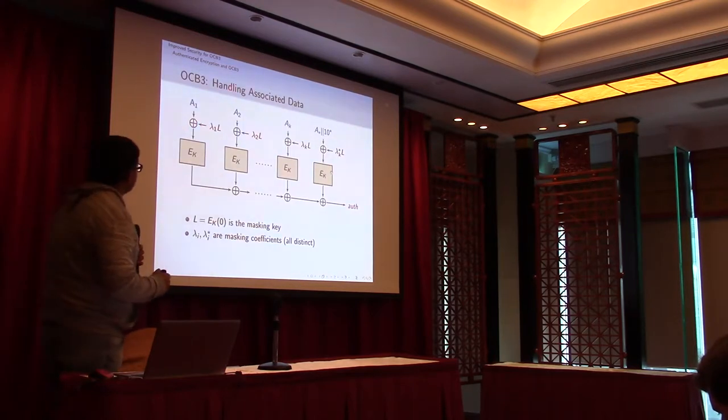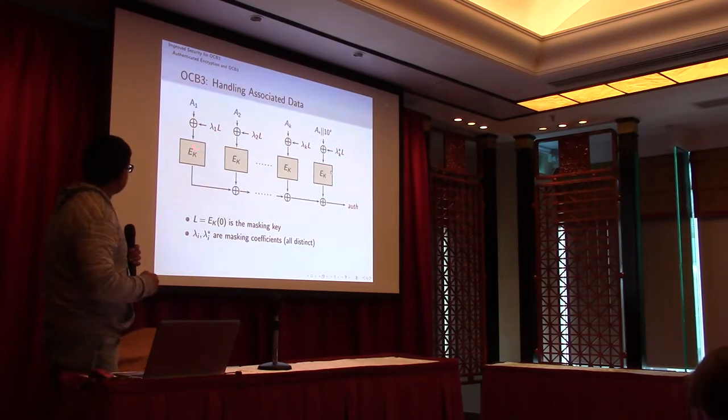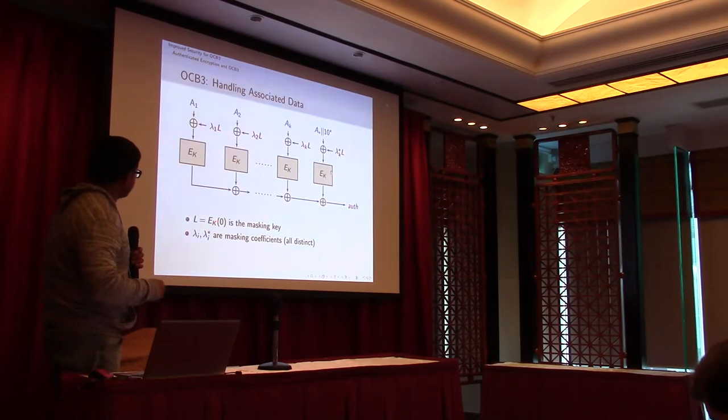And also we need to process the associated data, which is done as follows. We break the associated data into various blocks. These lambda_i and L are various constants, where L is the block cipher call on zero. This L is for the masking. Finally if you process it like this, we get an auth tag, and this authentication tag will be used later in OCB3.